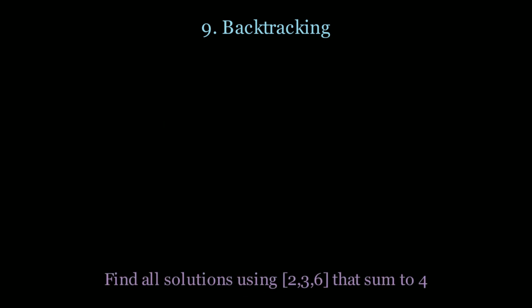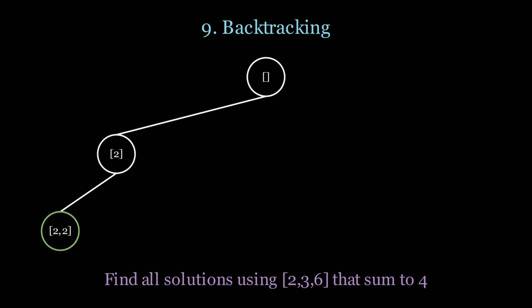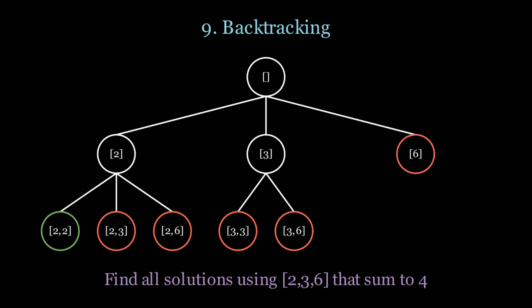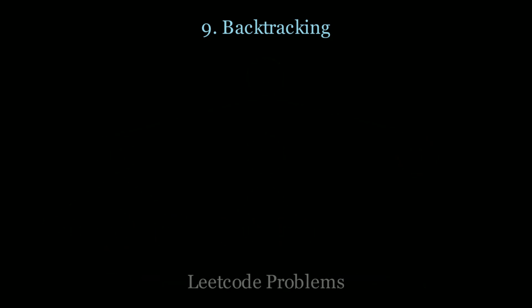We can also prune paths. For example, find all solutions using 2, 3, and 6 that sum to 4. Taking two 2s gives us 4 — success. Taking 2 and 3 gives 5, which exceeds 4, so we prune that branch. Similarly, 2 and 6, and 3 and 3 all exceed 4 and are pruned. Notice how efficient we are by pruning branches we don't need to explore. For more practice, look at the following LeetCode questions.